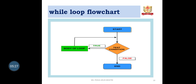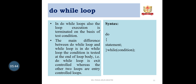While Loop Flowchart: Start, test condition. If the condition is true, the body of the loop executes. The condition is tested again; if still true, the body executes again. If the condition becomes false, the loop terminates.